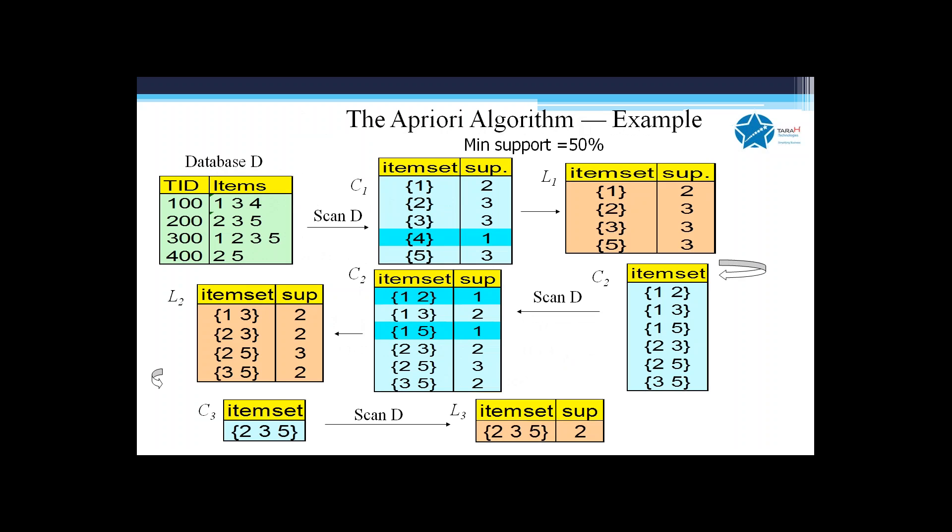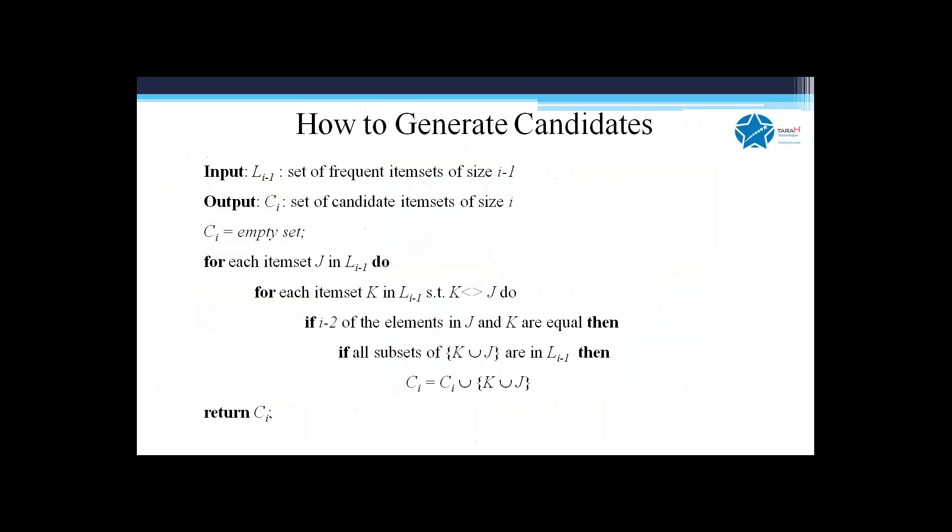This step generates candidates. We may generate a K-size set where we find that some subset is probably not a frequent item. At the end, we look at all possible subsets which do not satisfy the criteria.